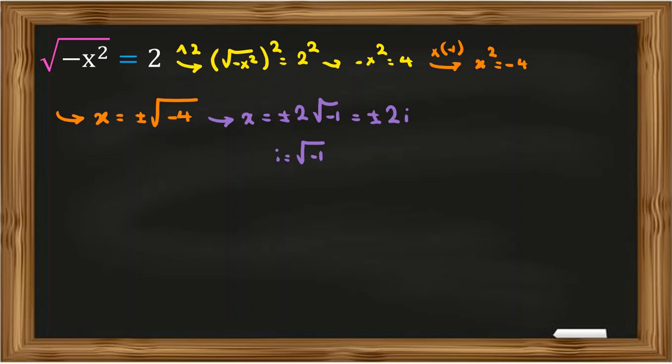Now we want to check, does it satisfy the main equation? Negative x squared, if we replace x with plus or minus 2i, will be minus plus or minus 2i squared, which will be negative 4i squared.